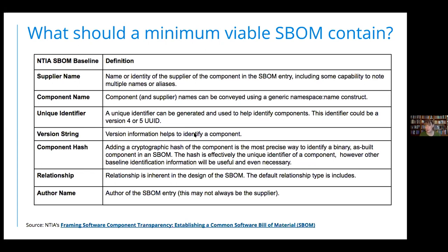For the component, you want to know what version it is. To improve reliability - because people aren't great about updating version numbers after applying patches - you really do want to have a hash, so you can say definitively you're talking about this specific component. From those components, you want to potentially have relationships because a component has dependencies on other components included in it or has interactions. Being able to go down at least one level at minimum, hopefully more, is needed to get this automation going. And the person or company who created the SBOM needs to be identified - that's for building trust. If a maintainer from a project created the SBOM as part of the release process, that would have a higher degree of trust than a third-party tool scanning and trying to figure it out.